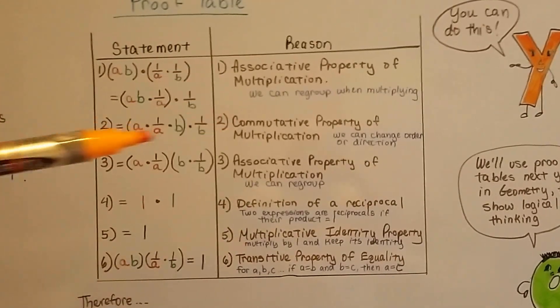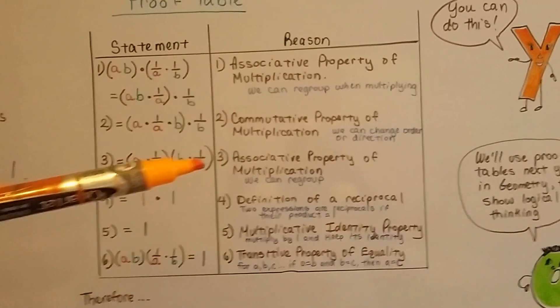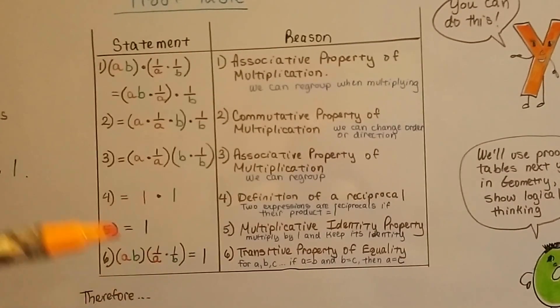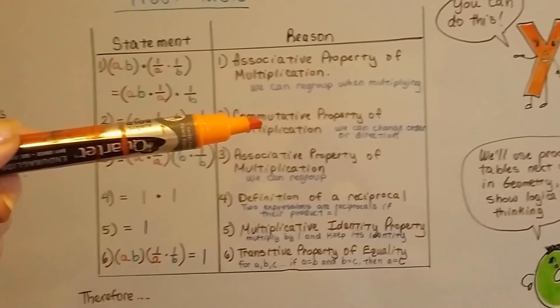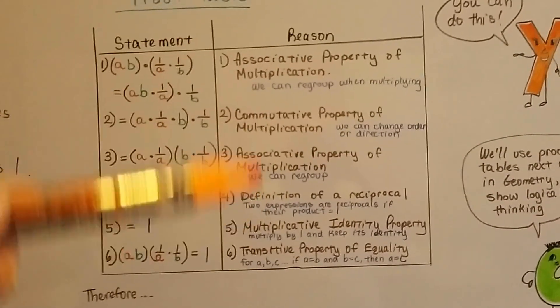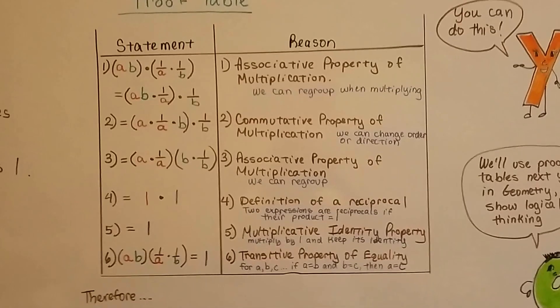Your first statement equals your first reason. Number 2 is next to number 2, number 3 is next to number 3, and it goes all the way down. We make a statement and this is our proof for the statement, then we make another statement and that's our reason or proof for the other one. We go all the way down until we prove what we're trying to prove.